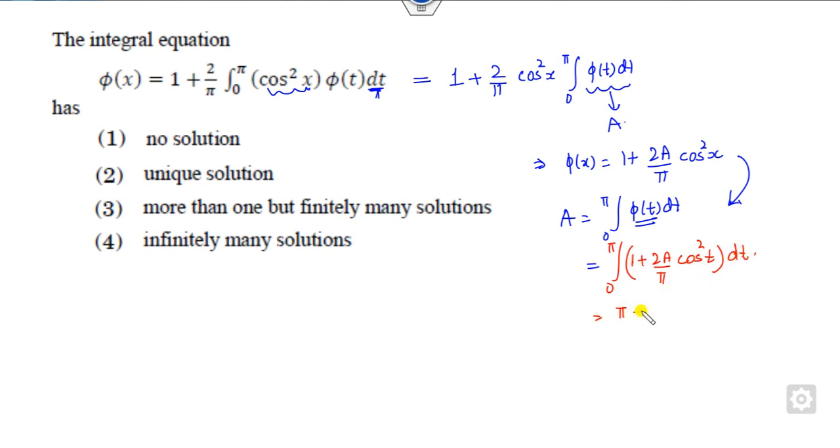When you integrate this, this will be 1 plus 2a upon pi, which is common, times the integral from 0 to pi of cos square t. All of you know that the integration of cos square is pi by 2, because you can simply write cos square t as 1 plus cos 2t.